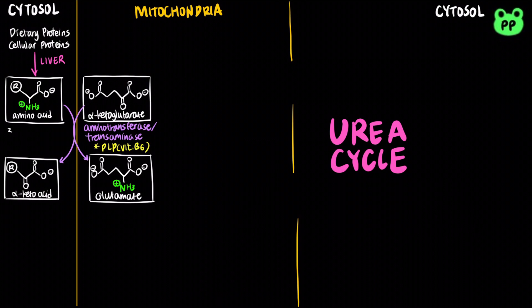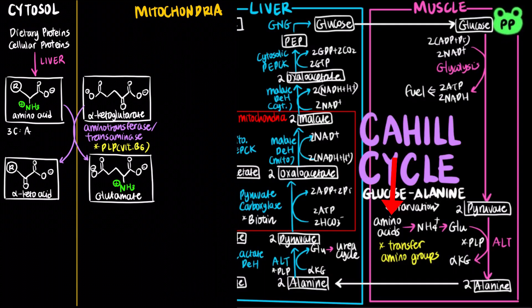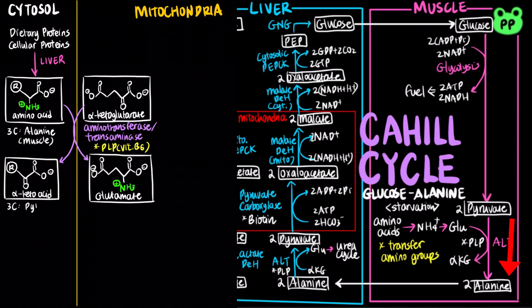In skeletal muscle, excess amino groups are generally transferred to pyruvate to form alanine, and alanine is transported to the liver by the glucose-alanine cycle, also known as the Cahill cycle, which has been covered in a previous video.